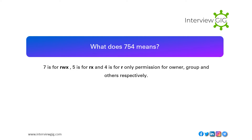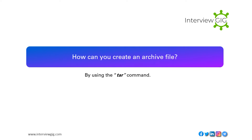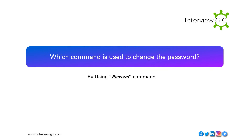What does 754 mean? 7 is for rwx (read, write, execute), 5 is for rx (read, execute), and 4 is for r (read only) — representing permissions for owner, group, and others respectively. Which command is used to view your username in Unix? By using the whoami command.